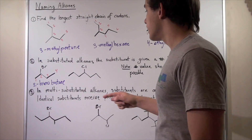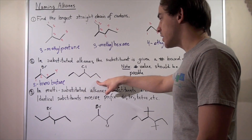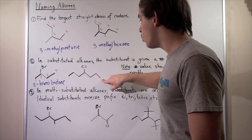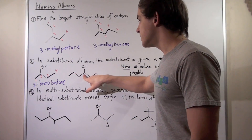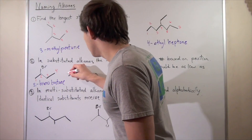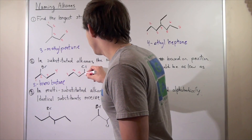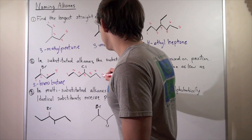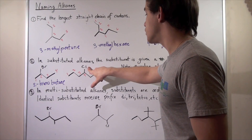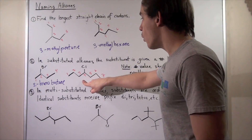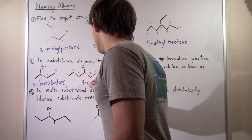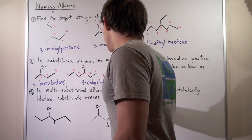Now the second molecule also has symmetry, so it doesn't matter which end we start from — either way the substituent is at position four. Counting one through seven, we have a heptane backbone with a chloro substituent at position four. So that gives us 4-chloroheptane.